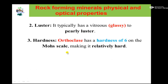The second physical property of orthoclase is luster. It typically has a glassy or vitreous luster. The third and most common physical property used to identify orthoclase or K-feldspar is hardness. It has a Mohs hardness of 6. The hardness of orthoclase or K-feldspar is 6 on the Mohs scale.